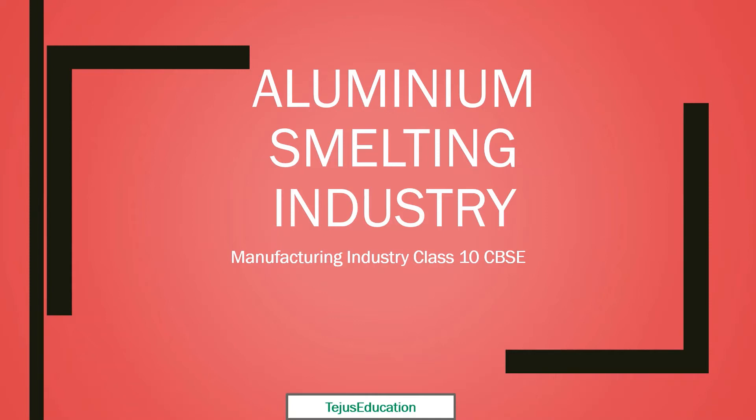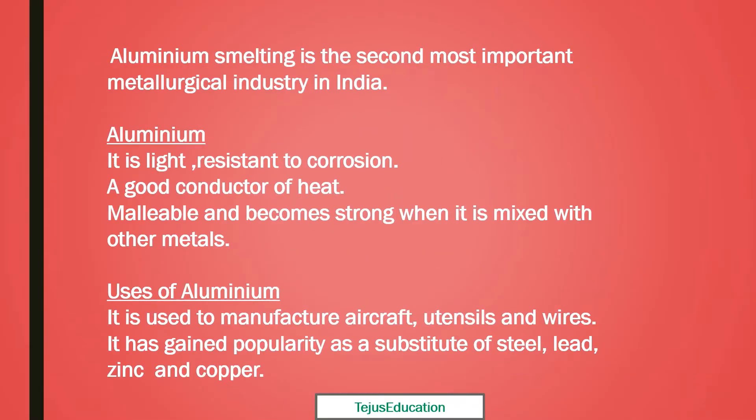Hello, welcome to Tejas Education. How are you all doing, children? Let's learn about Aluminium Smelting Industry, which comes under Manufacturing Industry, Class 10 CBSE Board. Aluminium smelting is the second most important metallurgical industry in India.